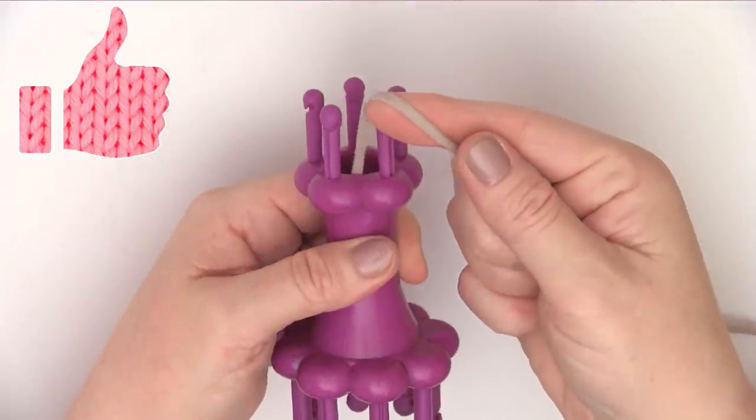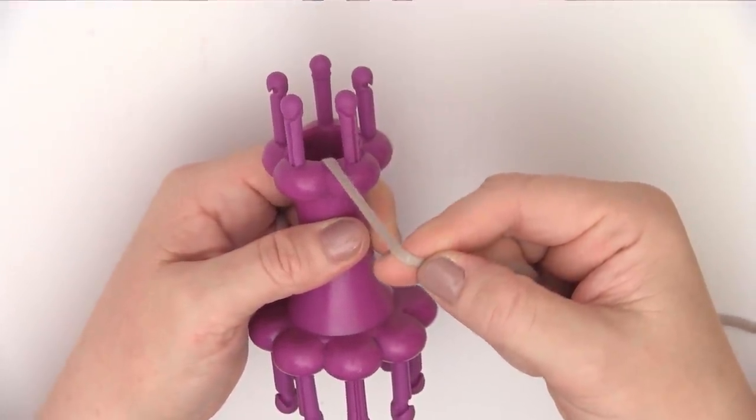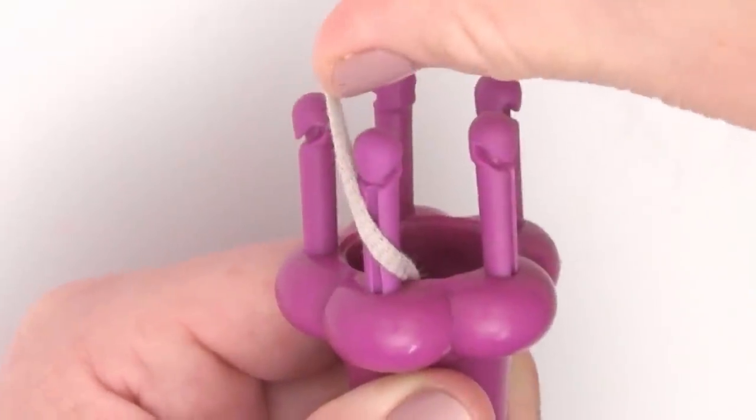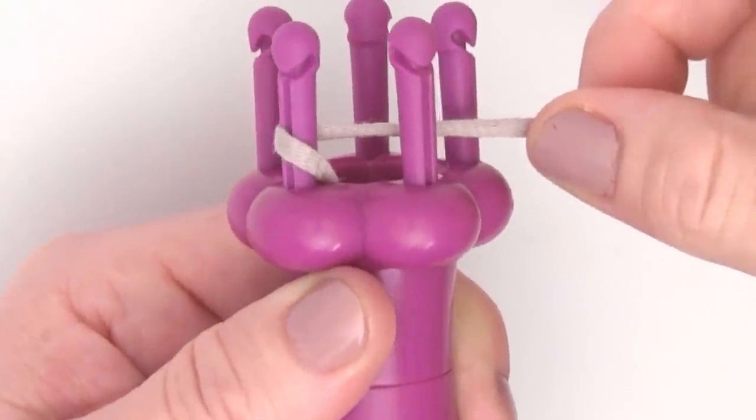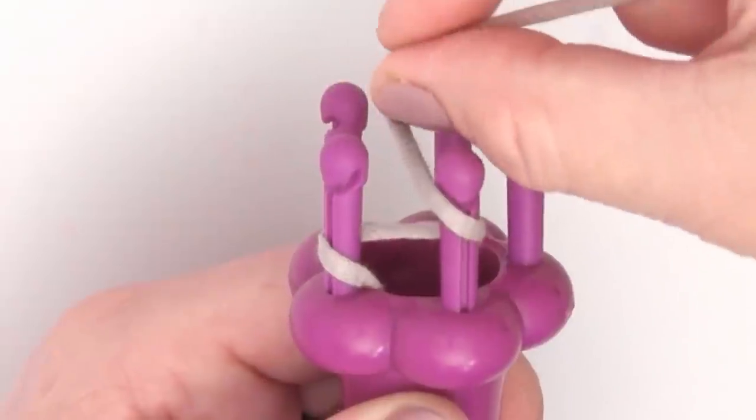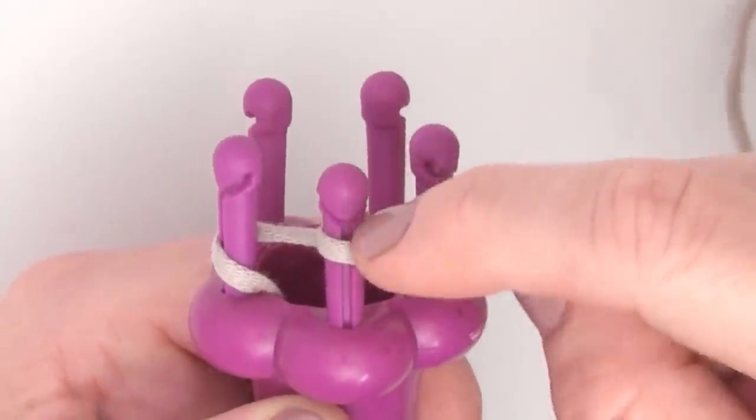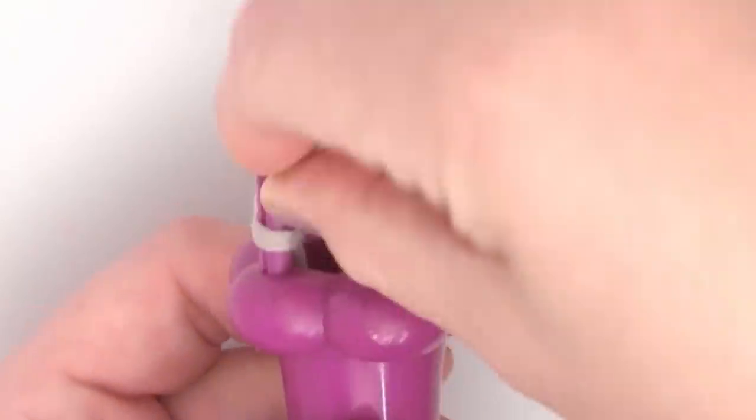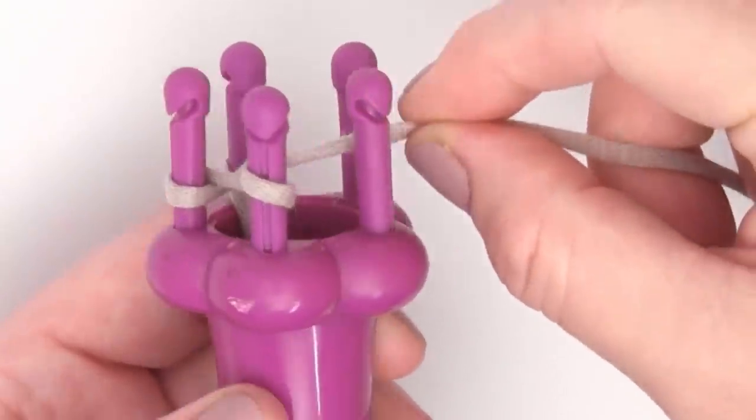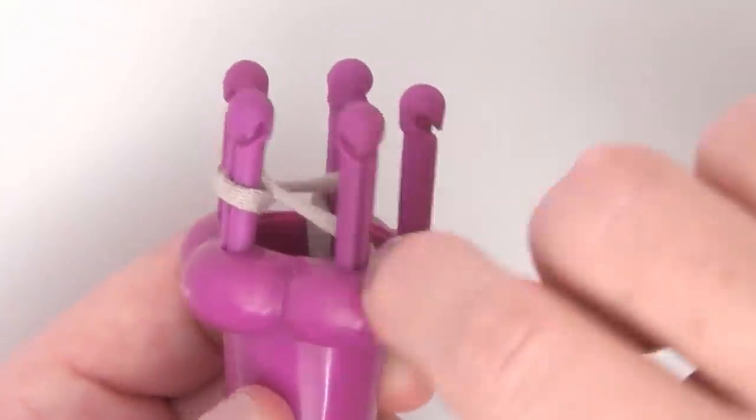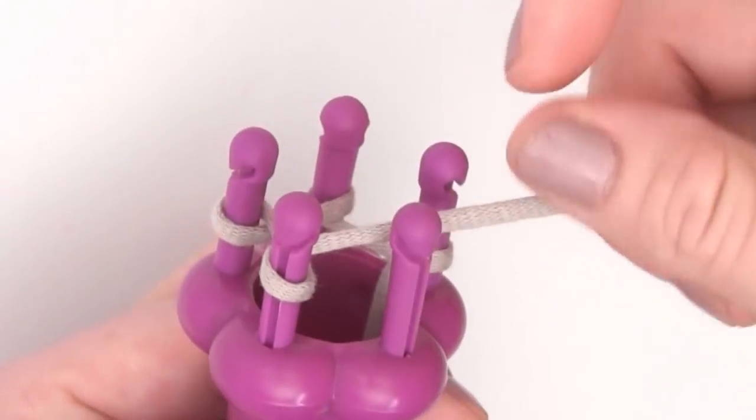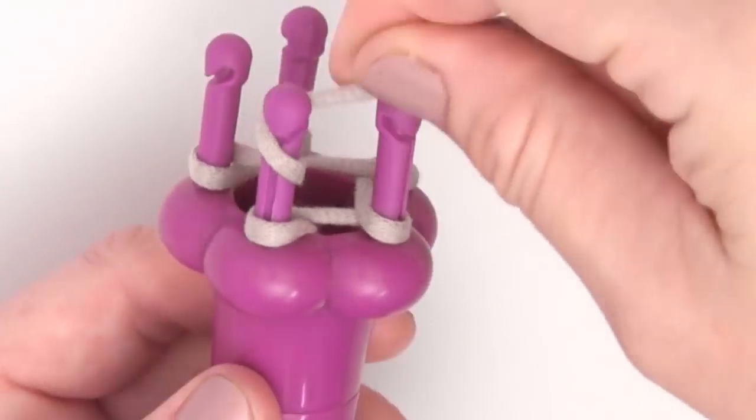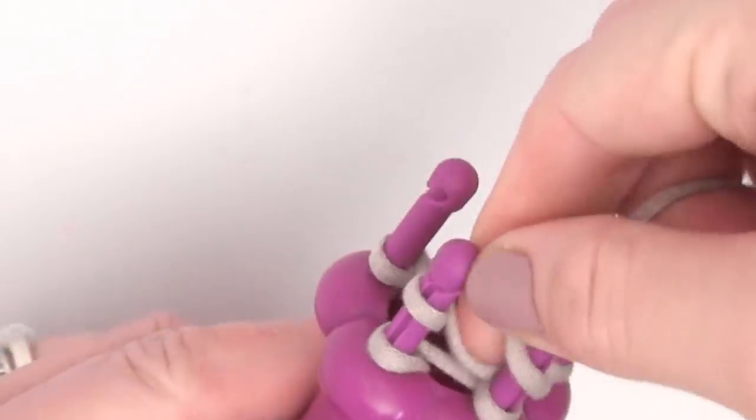So for the loom, we take the yarn that is between these two pegs here. Next, we wrap it around the front of the one on the left and we're bringing it around clockwise and then behind the next peg. So we made one little loop there. Now again, wrap it around the front going clockwise and then behind the next peg. Once we've wrapped all five pegs in this way, we're going to do it exactly the same way until all five pegs have two yarn wraps each.